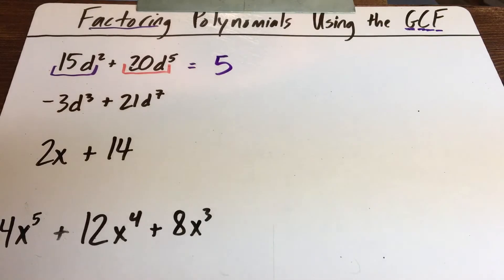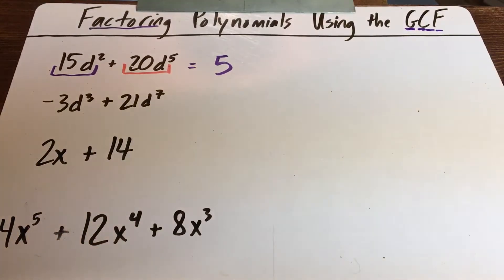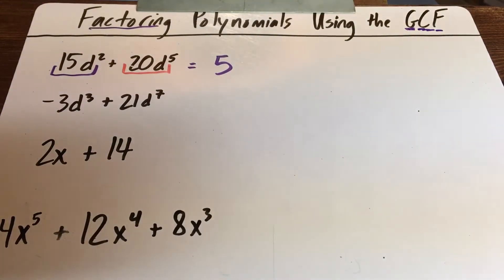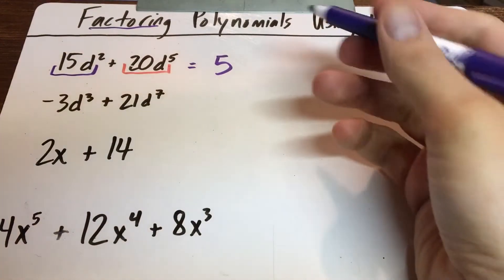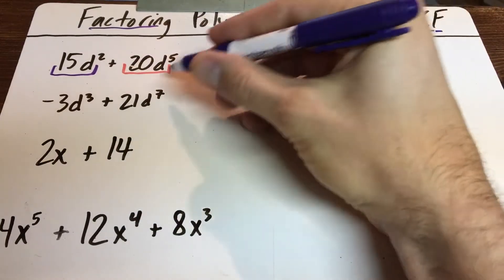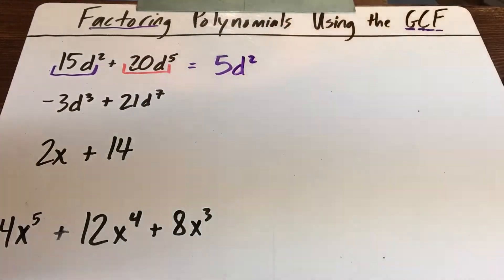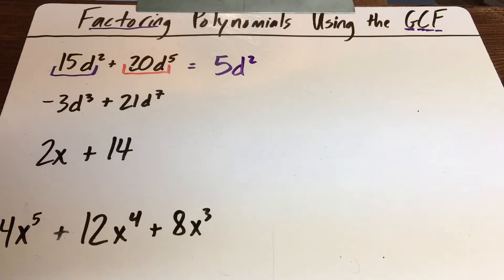But what about the letter D's—don't they also have D's in these terms? Each term has a certain amount of D's, so we ask how many D's they have in common. Do both terms have at least one letter D? Yes. At least two D's? Yes. At least three D's? No—this one only has two. So both terms have at least D-squared in common. They both have two D's, but not three.